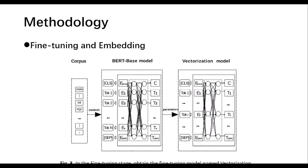In the fine-tuning stage, the released BERT-based pre-trained model is leveraged to obtain the fine-tuning model named vectorization. As illustrated in Figure 3, both pre-training and vectorization model have the same architectures. The model is first initialized with the same pre-trained parameters.